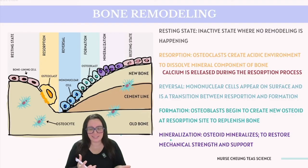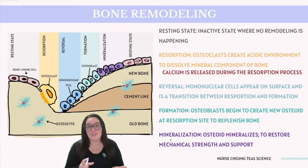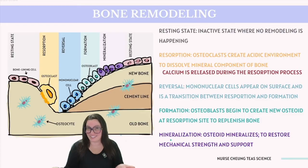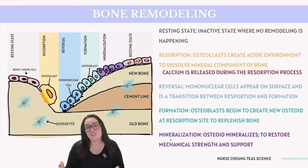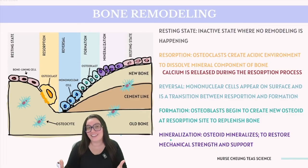You might ask yourself: why does the body intentionally break down bone? The reason is that the body continuously adapts to various stresses through a process known as bone remodeling, where old bone is systematically removed and new bone is formed in its place. This continuous cycle involves several distinct phases: resting, resorption, reversal, formation, mineralization, and then back to the resting state. During the initial resting state, the bone surface cells — osteocytes, osteoblasts, and osteoclasts — are all inactive. As we move into the resorption stage, osteoclasts attach to the bone surface and create an acidic environment that helps dissolve the mineral component of the bone matrix, and also degrade the organic matrix, resulting in the formation of a resorption pit. This phase is crucial for removing old, damaged, and unnecessary bone tissue, forming new bone and helping regulate our calcium levels.